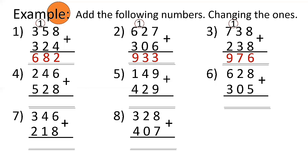Number 4: 246 plus 528 — 6 plus 8 is equal to 14, bring down 4, carry 1 to the tens place. 4 plus 2 is 6 plus 1 is 7 in the tens.